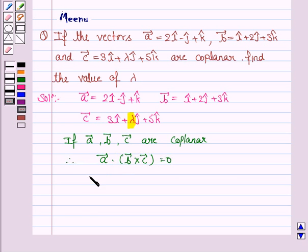Now A dot B cross C is given by the determinant. The first row is the coefficients of i, j, and k cap of vector A. So it is 2, minus 1, 1.